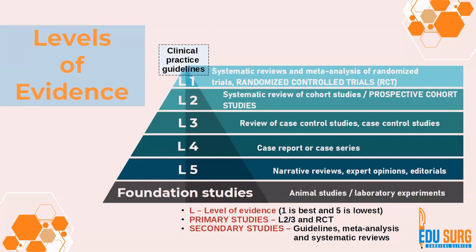Clinical practice guidelines are considered level 1 because they are more or less systematic reviews of already published articles. Articles written de novo are known as primary studies — that is L2, L3, and RCTs — as well as case reports or case series. Secondary studies are guidelines, meta-analyses, and systematic reviews — studies which originate by studying other already published articles.